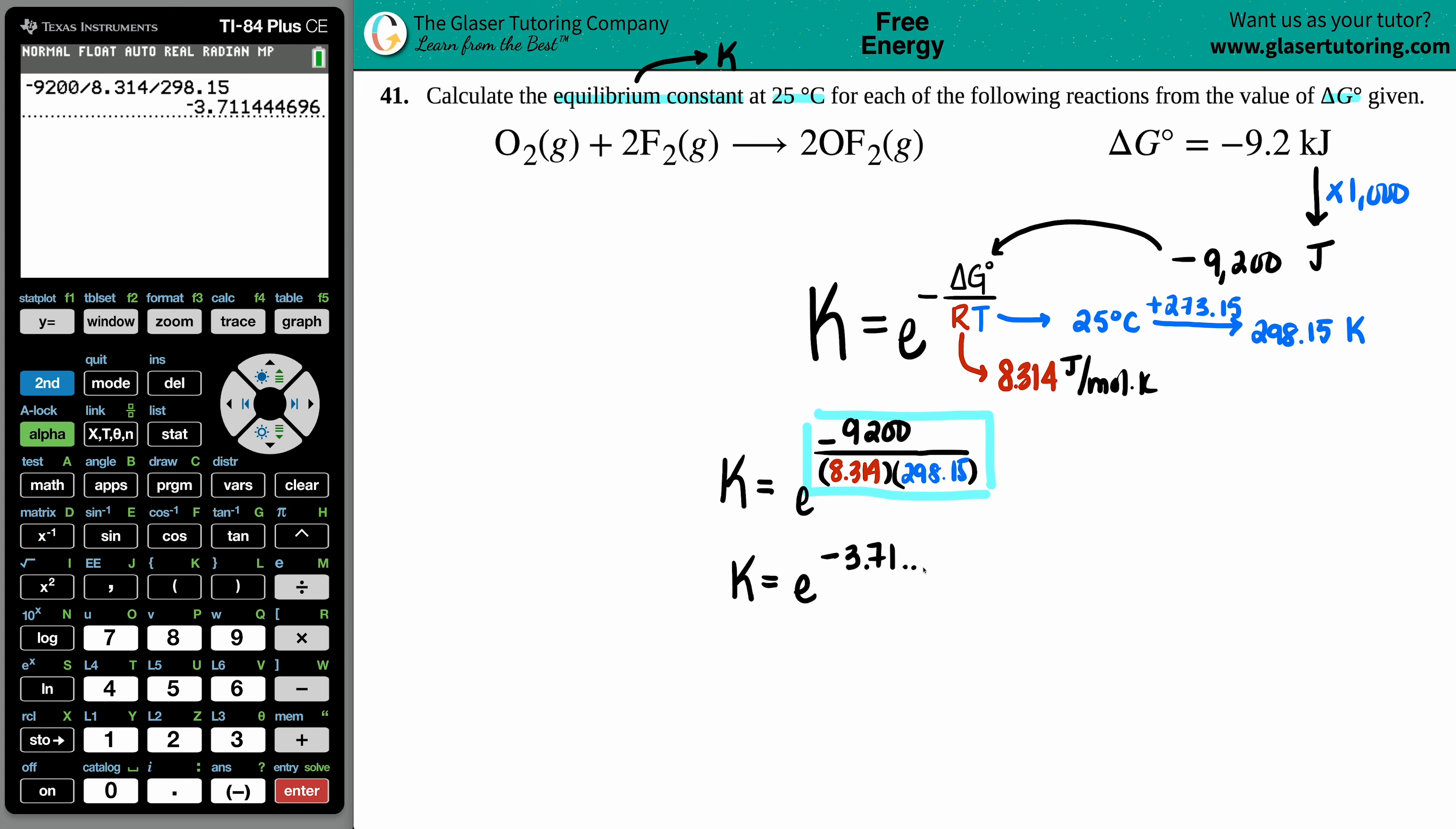So what I'm going to do now is I'm just going to do e raised to that number. So K equals, I go over to my calculator, the e button is the second ln, it's the inverse of the natural log. And now I'm just going to grab that value from the top and plug it in. And I do see a little bit of a mistake that I just saw, so I can correct it. Keep in mind that the delta G value was a negative.